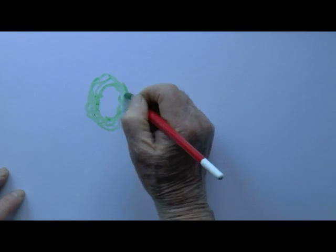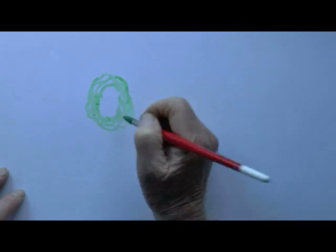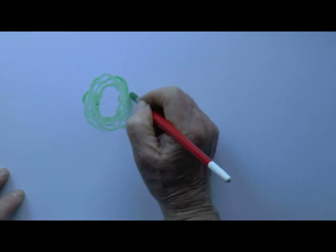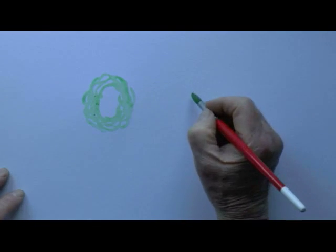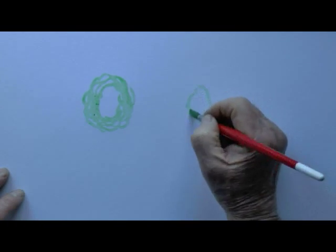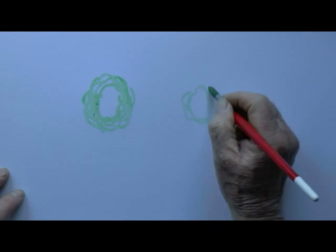And this little lettuce is called Charlie. And as you see, he's full grown. And now we'll draw another lettuce, and his name is George.